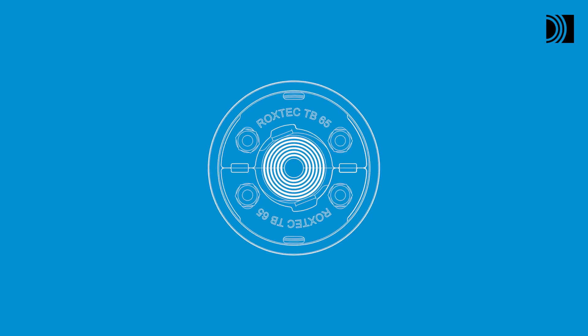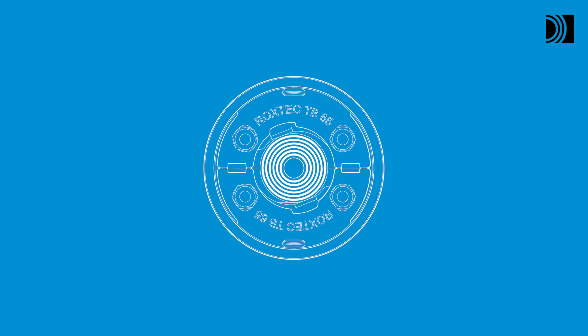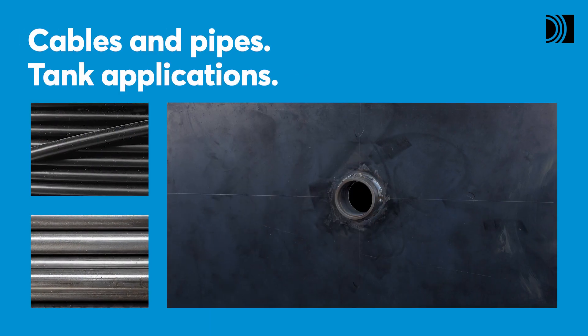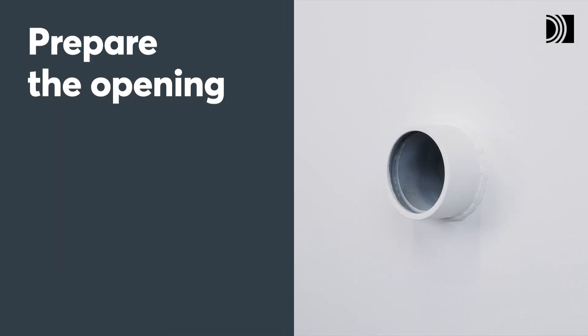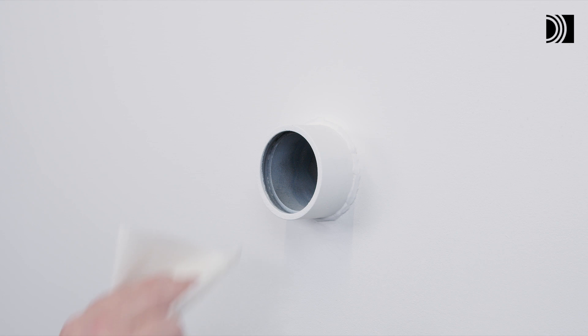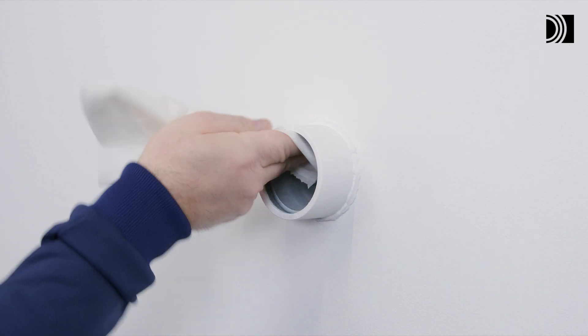With a Roxtec TB tank boundary seal, you can seal openings for cables and pipes in tank applications. Prepare the opening. Clean the SL-TB sleeve which is welded to the structure.